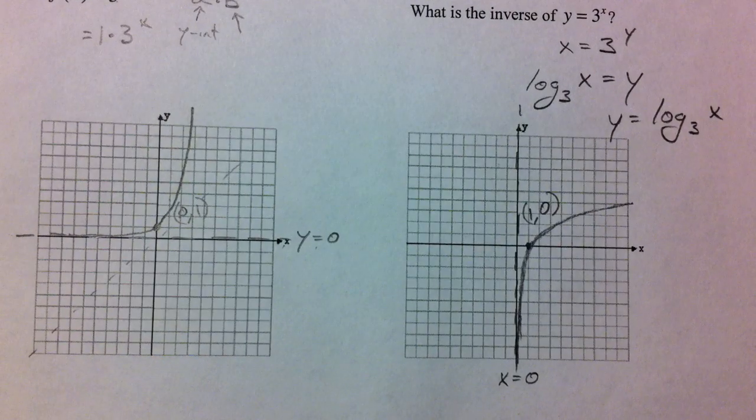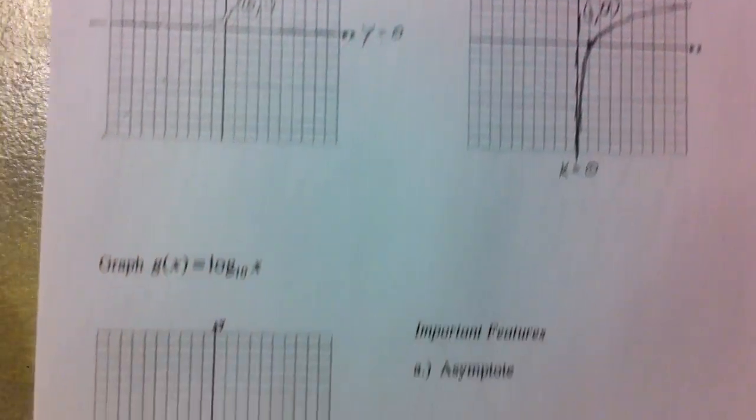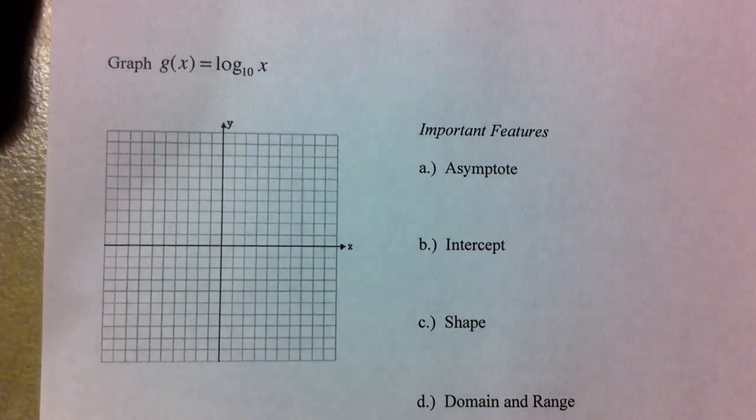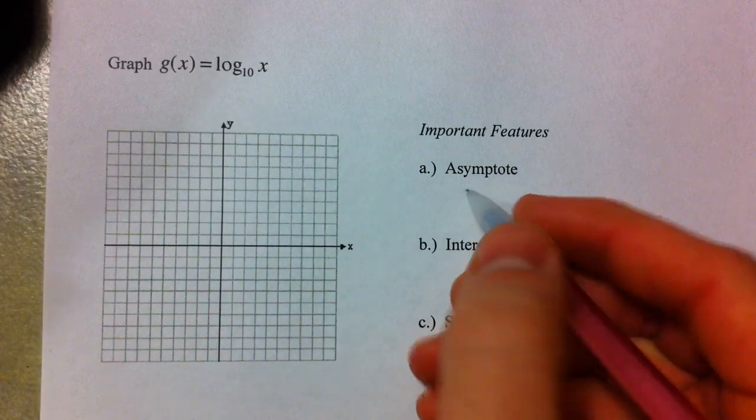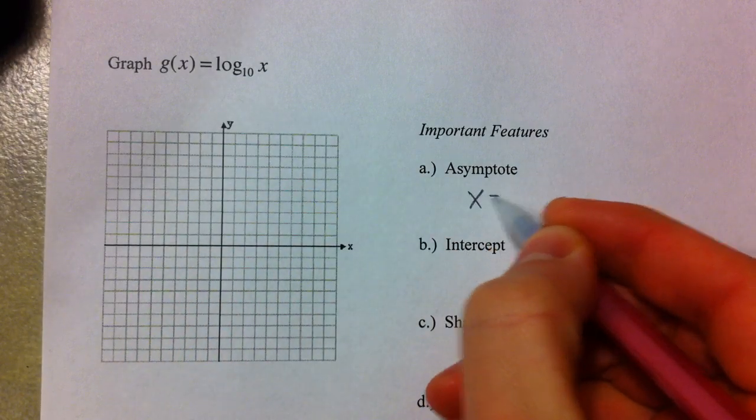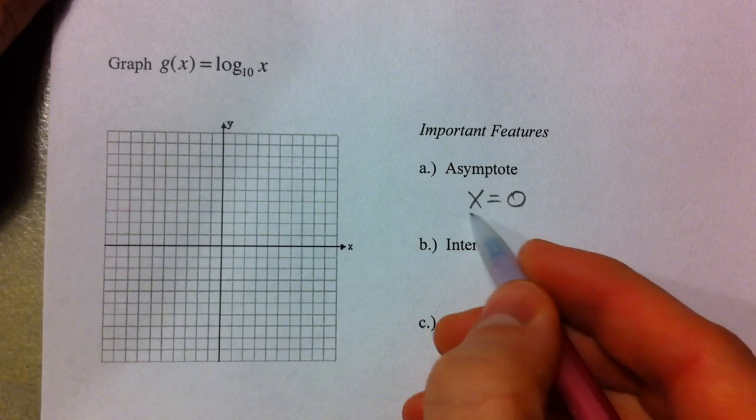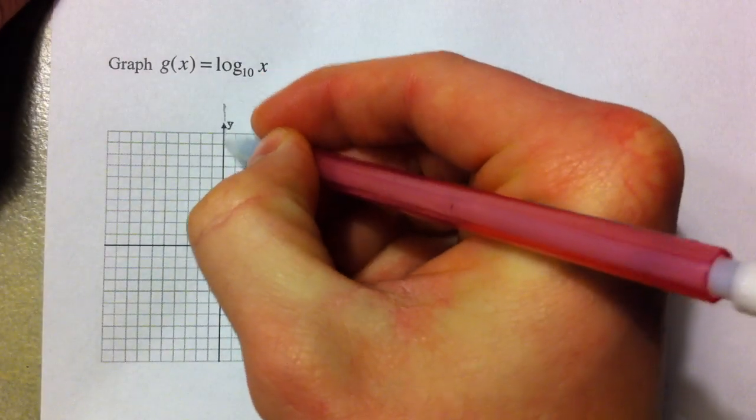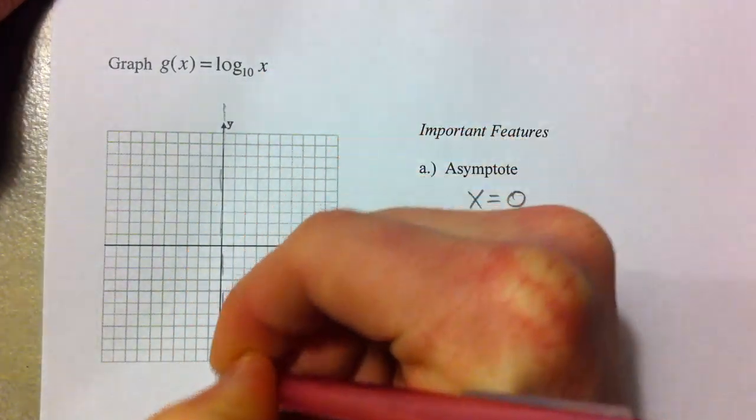So what do we need to be able to graph every single time? If you just graph the log base 10 of x, I want you guys to know that the vertical asymptote is going to be x equals 0 every single time.